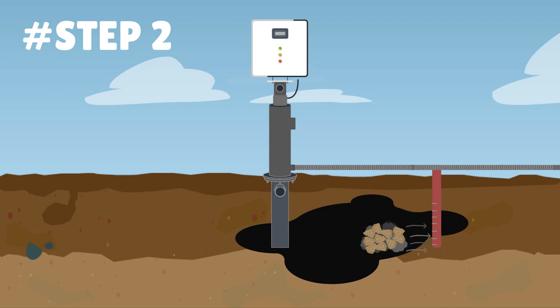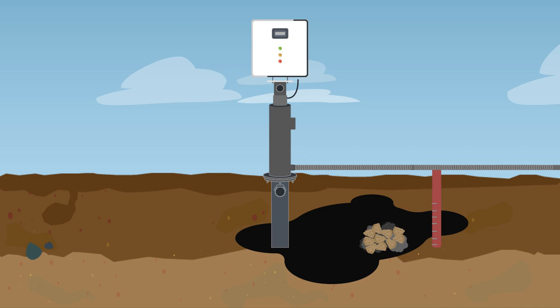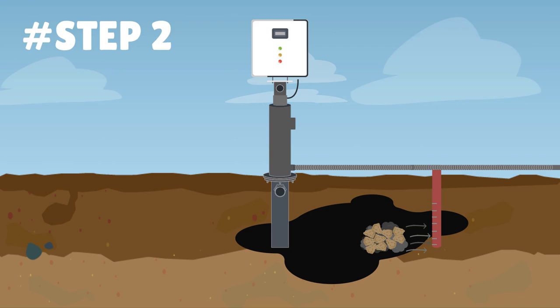The second step is to recover the vapour phase. To achieve this, the vapours are extracted from the ground using perforated tubes connected to an extractor and routed directly to an appropriate treatment system.